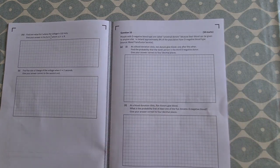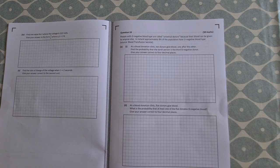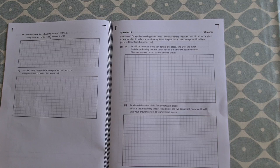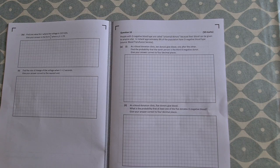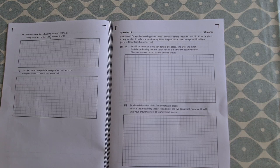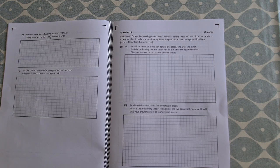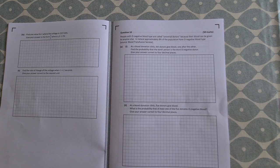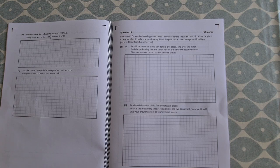And then Question 10. And I think on this one, a lot of students actually did this question, as opposed to Paper 1 where they didn't. So we have, the context of the question is donating blood and percentages of the population having a certain blood type. So at a blood donation clinic, 10 donors give blood one after the other. Find the probability that the 10th person is the third O negative donor.